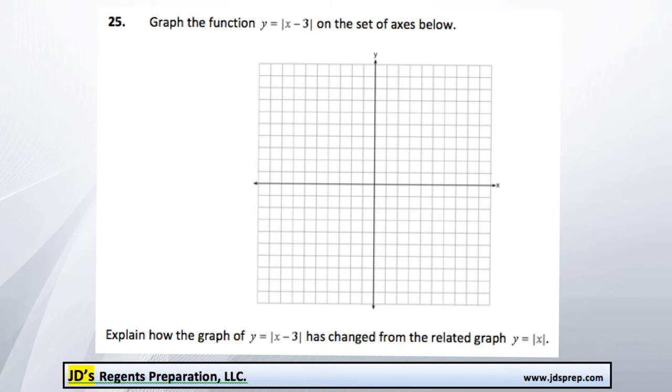This is problem number 25 from the June 2015 Algebra Regents exam. This one's fairly straightforward. All we need to do is graph the function y equals the absolute value of x minus 3 on this Cartesian plane. And then we need to explain how the graph has changed from the related graph of y is equal to the absolute value of x.